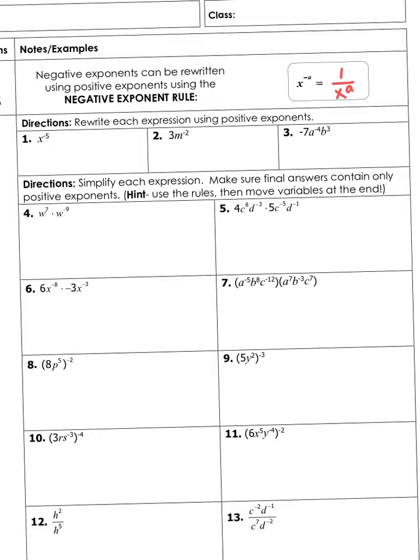For our first example, we have x to the negative fifth power and it says write each expression using positive exponents. I'm literally going to rewrite this as 1 over x and the 5 becomes positive. That's your answer: 1 over x to the positive fifth.